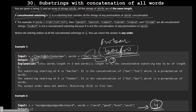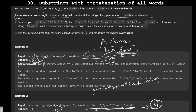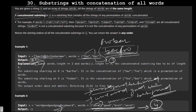At index nine, 'foobar' is also present, so we insert nine in our result and return both. In the second case, no concatenated string is present — words like 'goodbestword' or 'wordgoodbest' are not found in s — so we return an empty list.